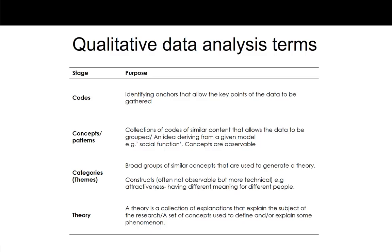Concepts and patterns include collections of these codes. They indicate similar content that allows the data to be grouped — an idea deriving from a given model. Often we'll have lots of codes that have to do with the attributes of something: something that is tasty, something that feels good, something that is colourful. All of these are kinds of attributes. When you have lots of codes that seem to relate to attributes, you can form a concept called attributes, and the codes become different kinds of attributes. What we are looking for is observable concepts — not necessarily relationships between concepts that aren't observable, but the concepts themselves.